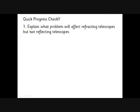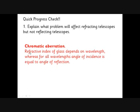So just to check you've got the ideas here, what problems will affect refracting telescopes but not reflecting telescopes? That one is chromatic aberration, because we're not bending the light here, all the different colours of light will reflect at the same angle.